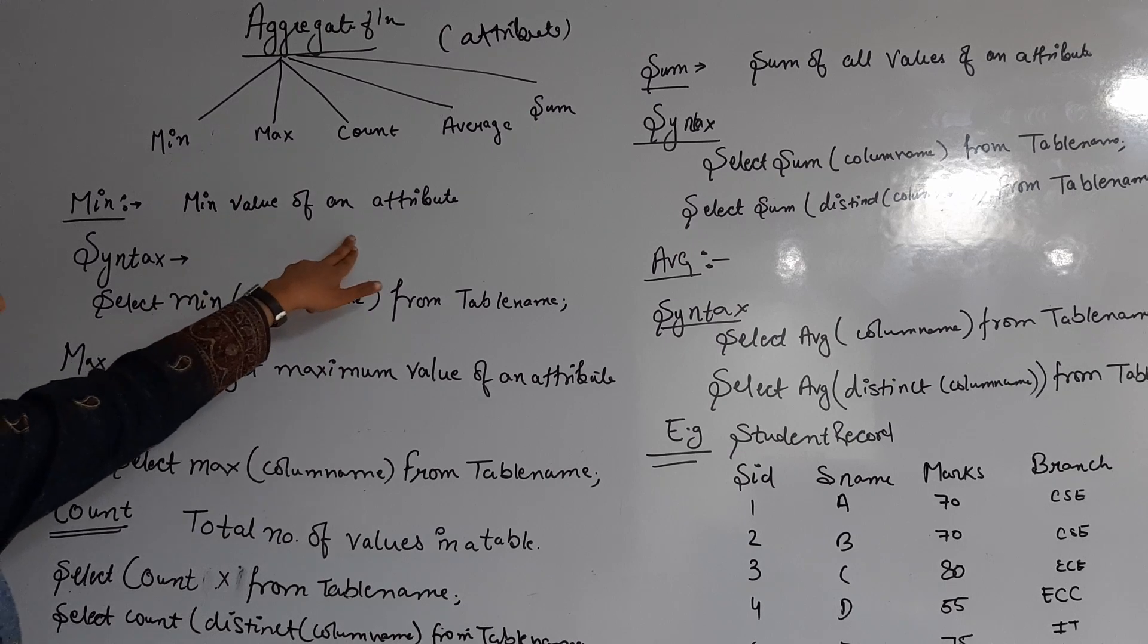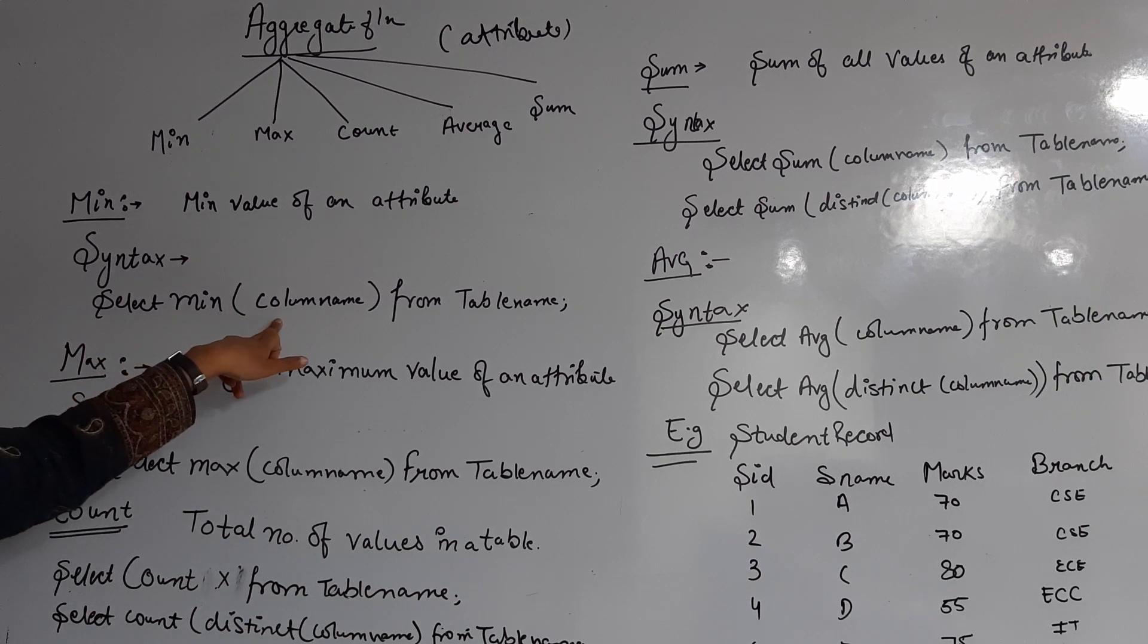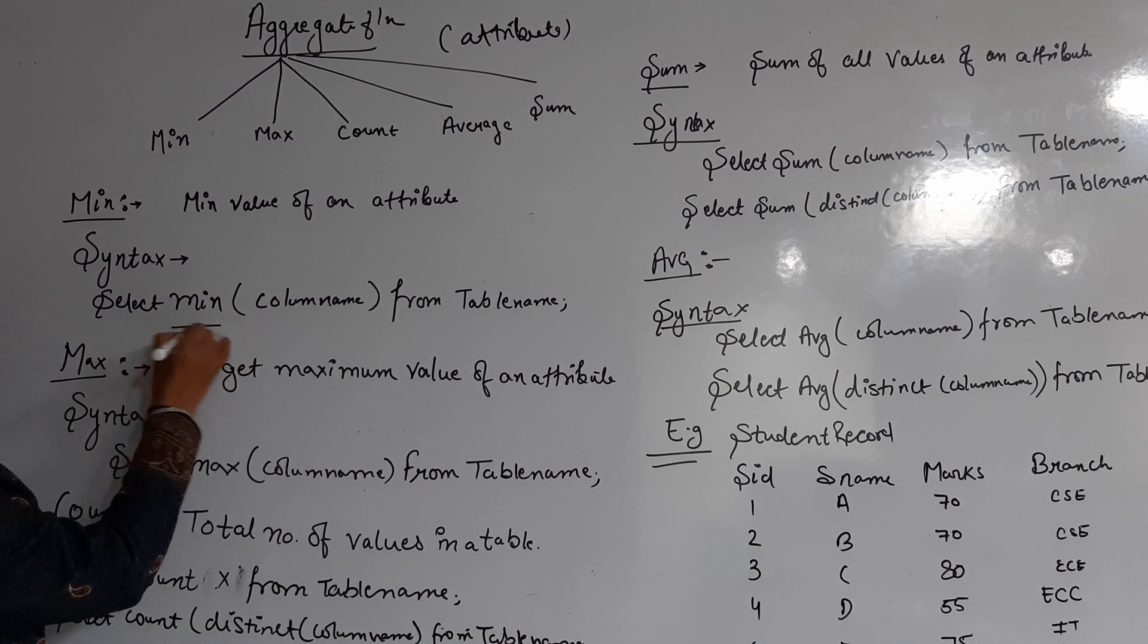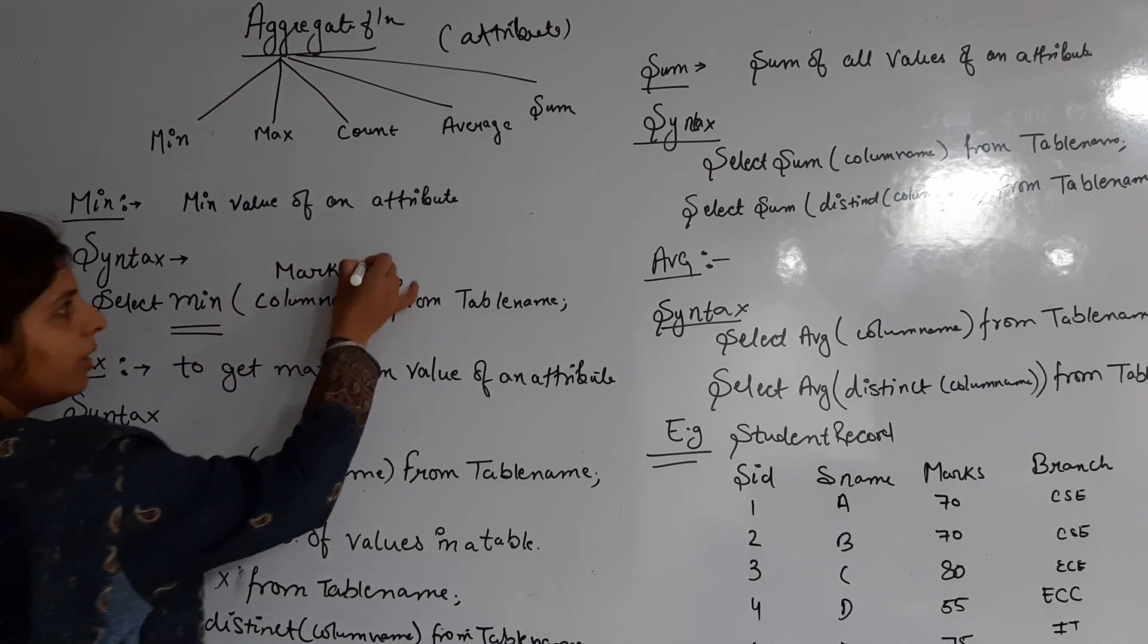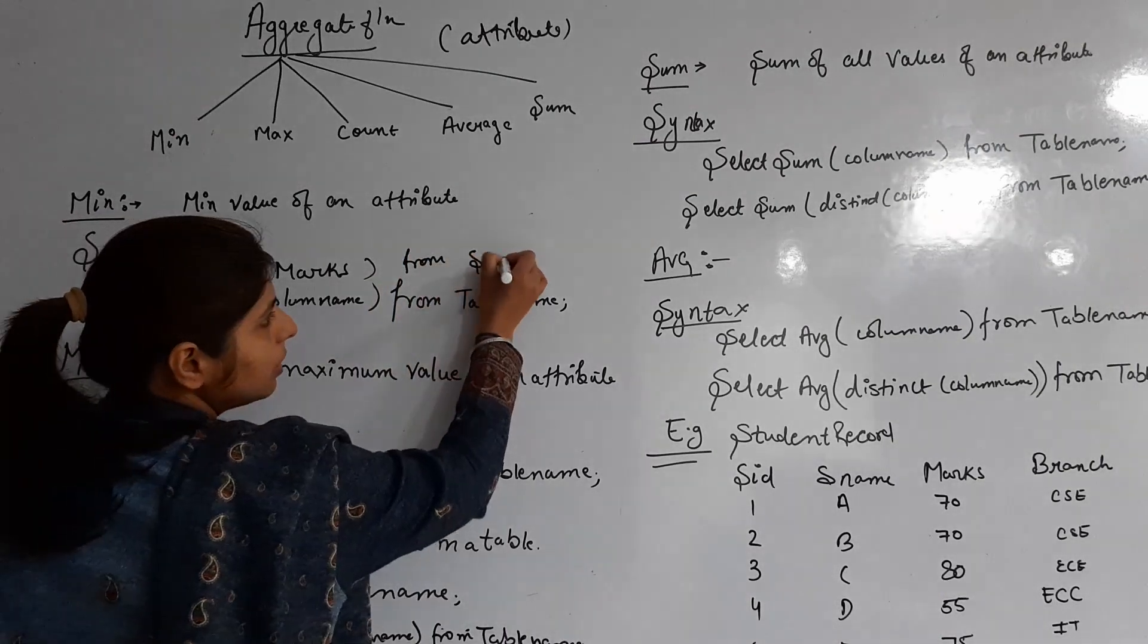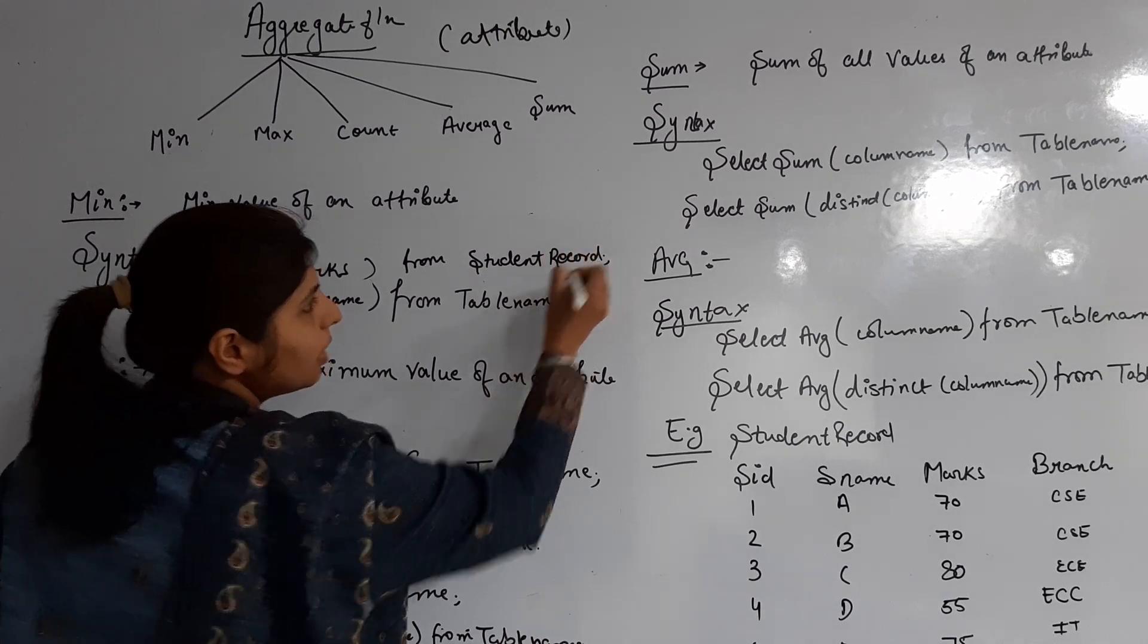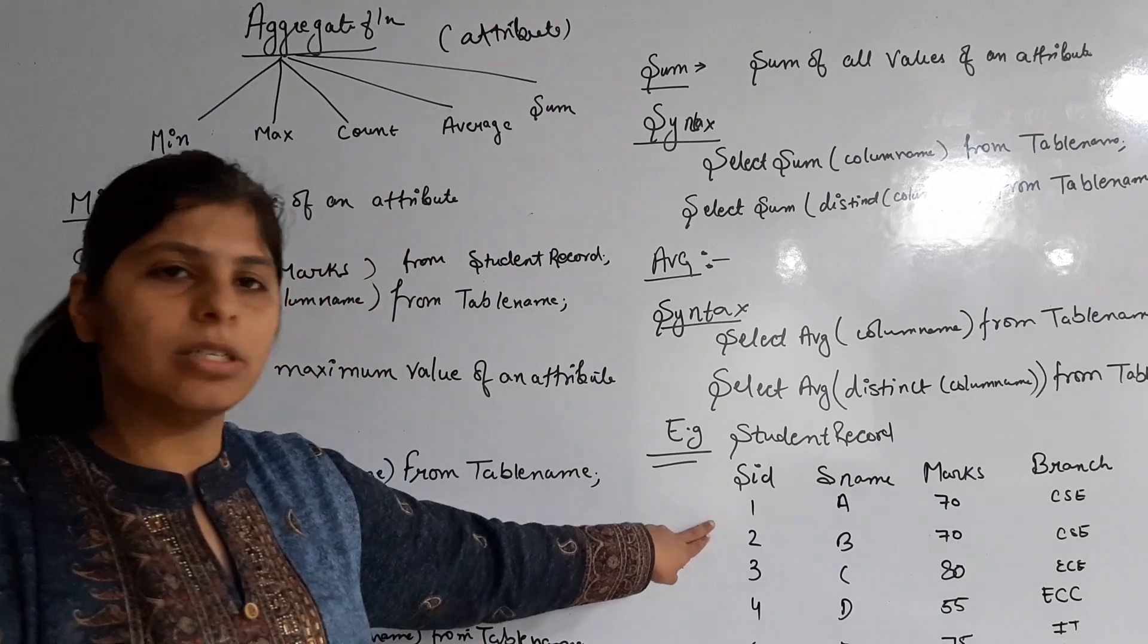Minimum value means we have to find the minimum value from an attribute. The syntax is: SELECT MIN(column_name) FROM table_name. So it becomes SELECT MIN(marks) FROM student_record. What are the values? If the first roll number has 70 marks, second 70, third 80, fourth 55, fifth 75.